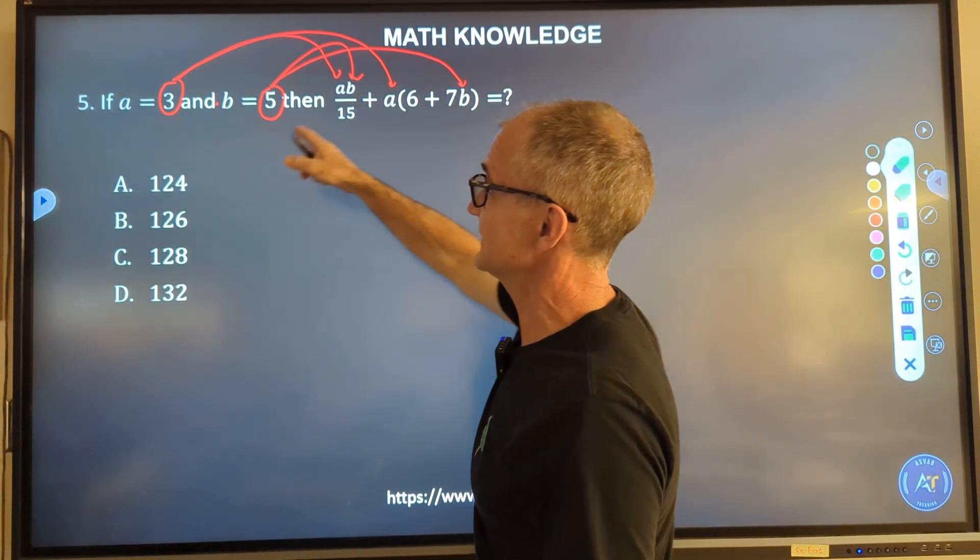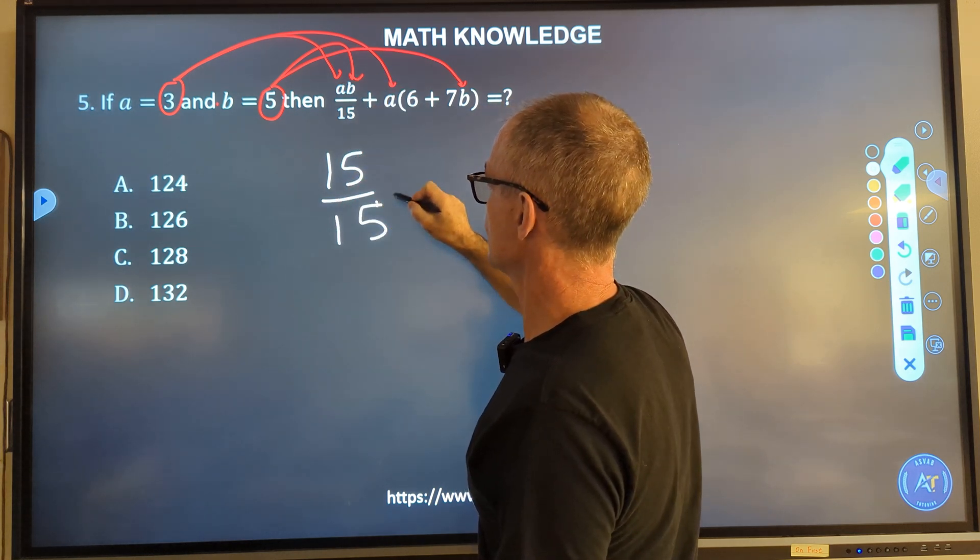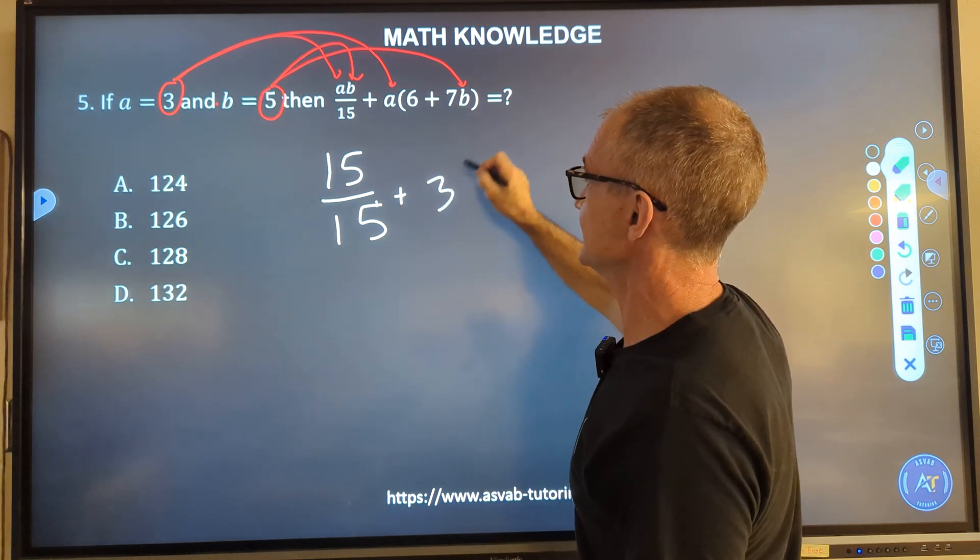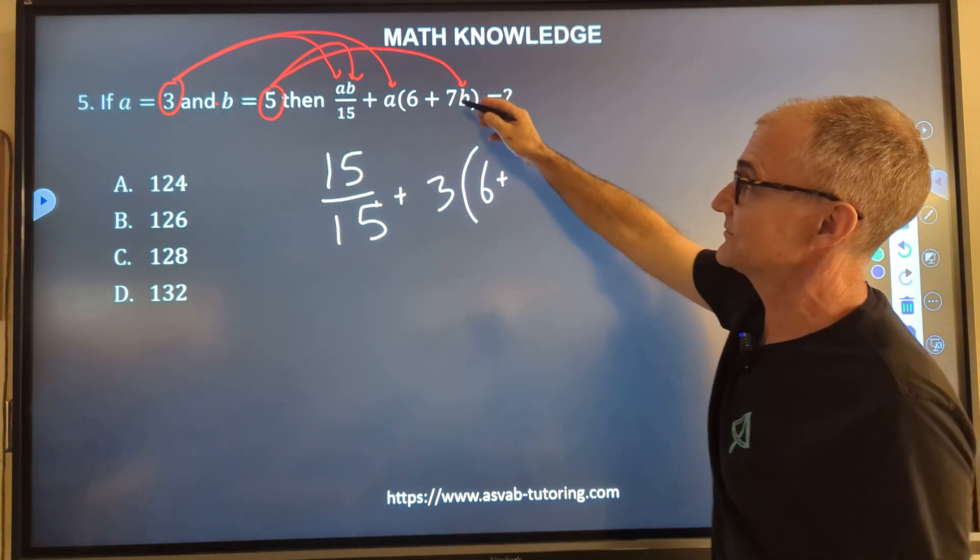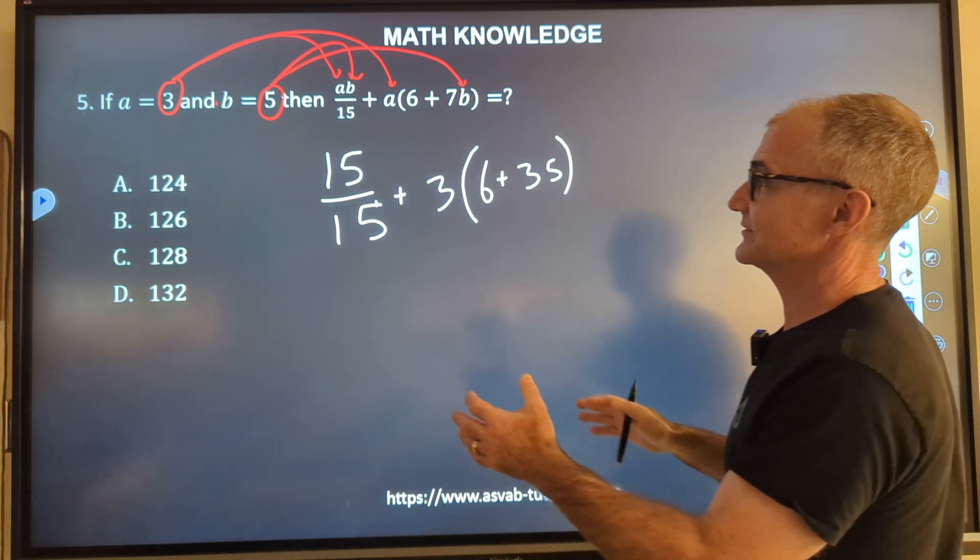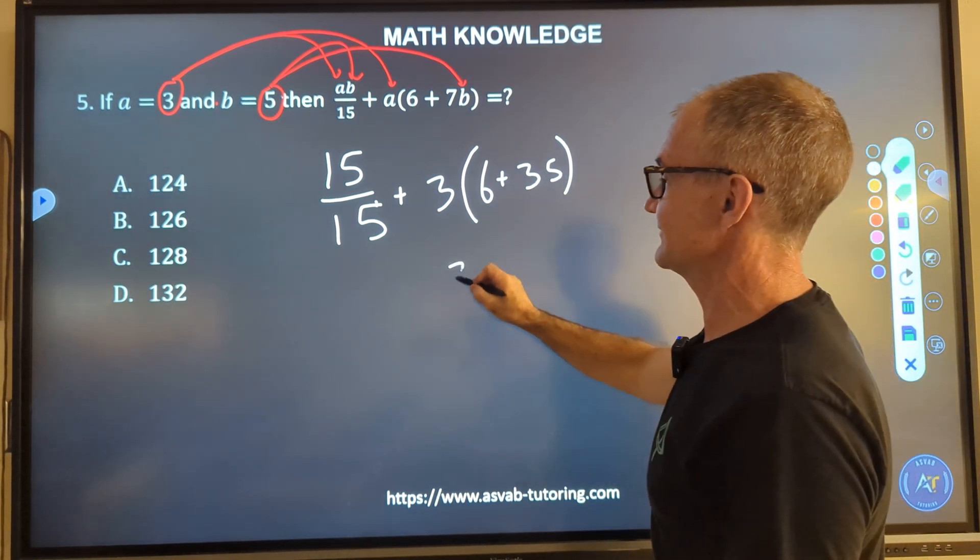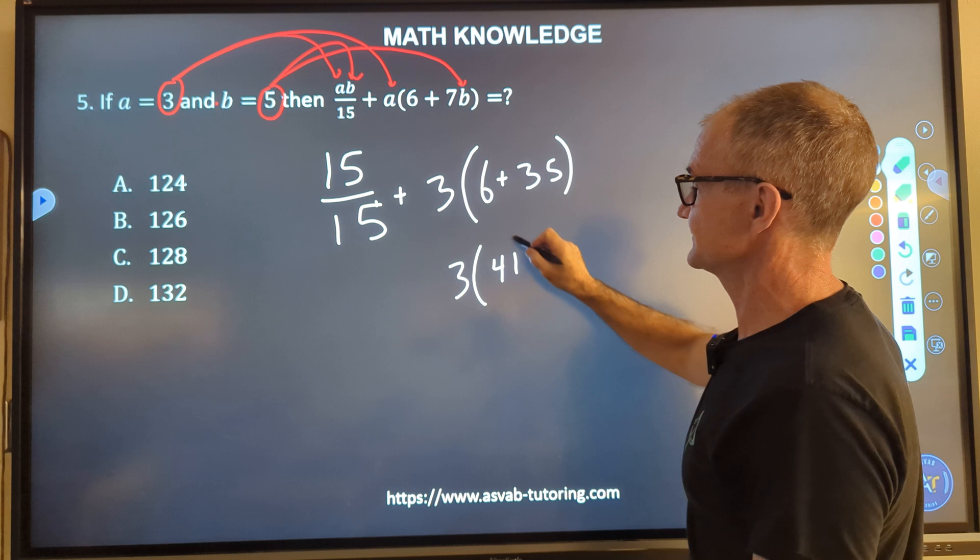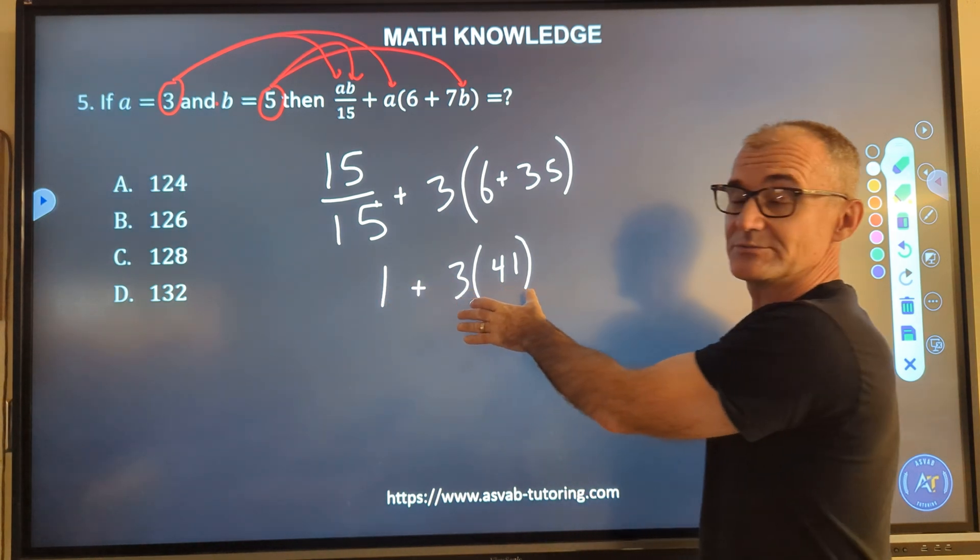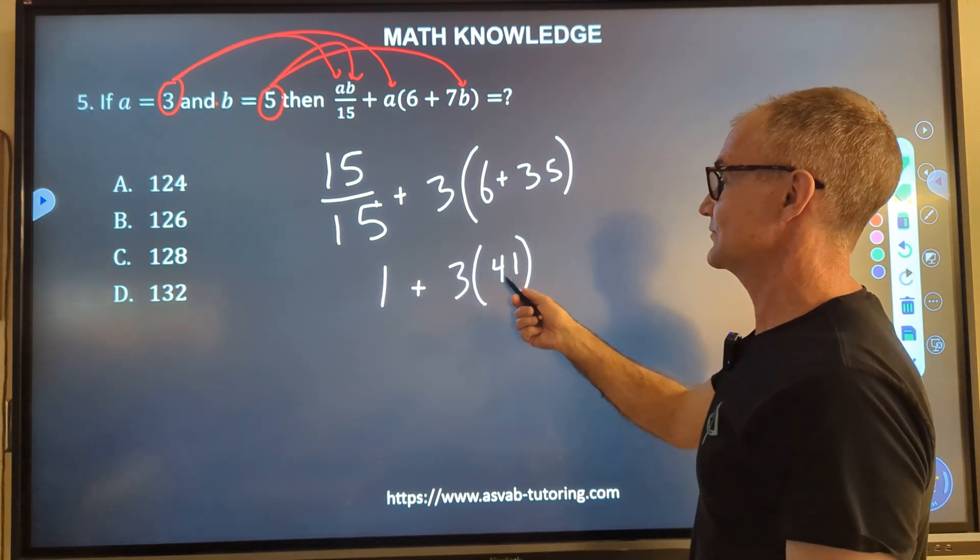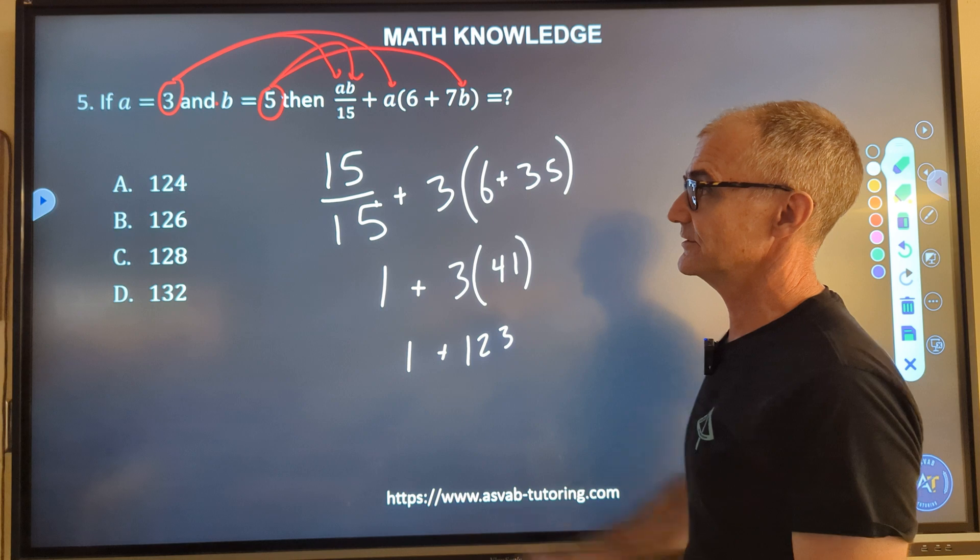A times B, three times five is 15. There's my AB over 15, plus A which is three, times six, plus seven times B, and B is five. So seven times five is 35. Now that I've done my substitution, I've got to do a little bit of simplification. The first step is parentheses. So I'm going to have three times 41. Then I'm going to reduce that fraction. I do not add until I multiply. Multiplication comes first. So this is 123. 123 plus one will give me 124. Answer A.